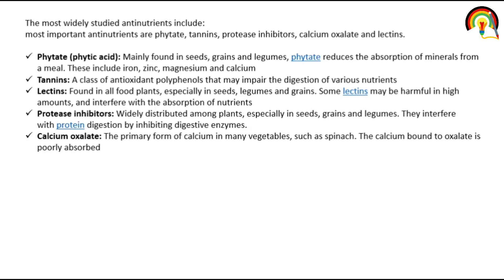Tannins are a class of antioxidant polyphenols that may impair the digestion of various nutrients — they prevent proper digestion of minerals and nutrients. Lectins are found in all food plants, especially in seeds, legumes, and grains. Some lectins may be harmful in high amounts and interfere with the absorption of nutrients.